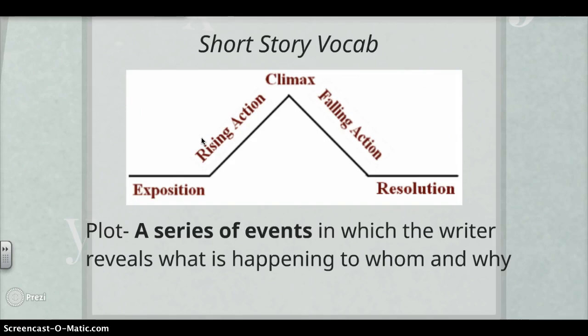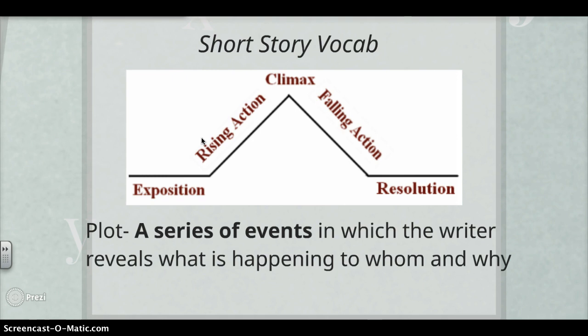Next I have plot, which is going to be the series of events in which the writer reveals what is happening, to whom, and why. The plot is a planned logical series that has a beginning, a middle, and an end. The image I have here is of the Plot Mountain, and this is how most plots are organized — it goes rising action, climax, and falling action. Using Finding Nemo again, the rising action would be Nemo being taken, the climax would be Nemo being found, and the falling action would be their family being reunited as the story comes together and ends.